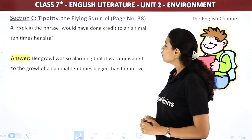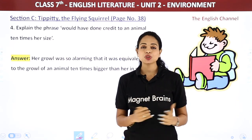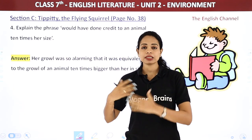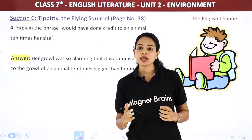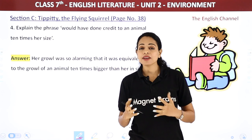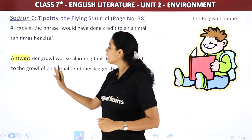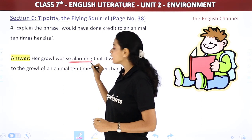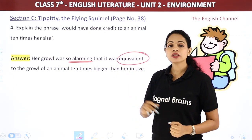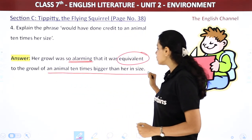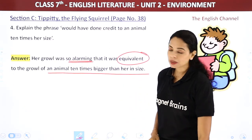Next question: Explain the phrase 'Would have done credit to an animal ten times her size.' If you remember the text, Tippity used to make many different types of sounds, and her growl — that rumbling voice — was so strong that even an animal ten times bigger could not produce such a sound. Her growl was so alarming that it was equivalent to the growl of an animal ten times bigger than her in size.